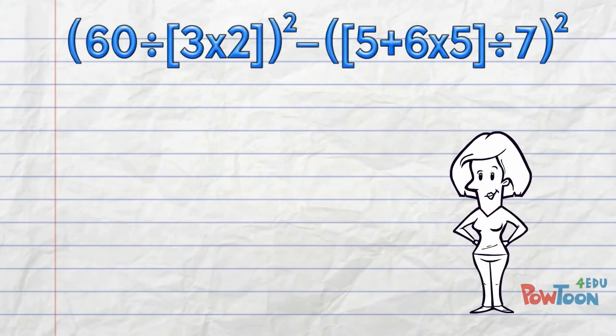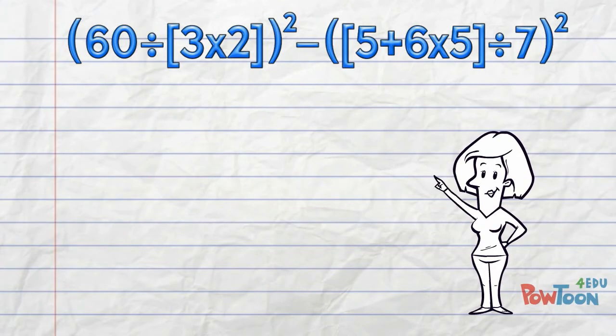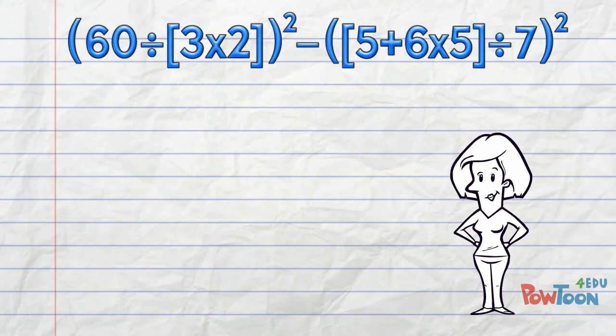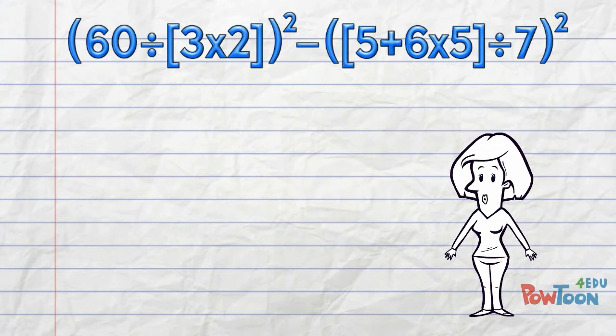Here's a problem that has brackets within brackets: 60 divided by 3 times 2 squared, minus 5 plus 6 times 5 divided by 7 squared. How are we going to think our way through this one?